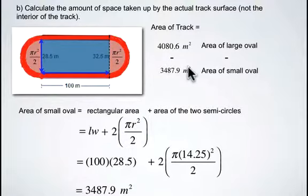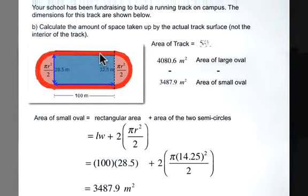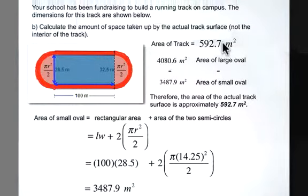And we can subtract that from the area of the large oval to find out the area of the track itself, which is 592.7 square meters. Therefore, the area of the actual track surface is approximately 592.7 square meters.